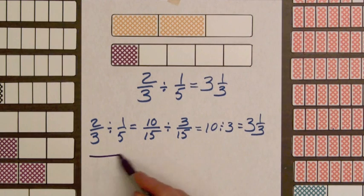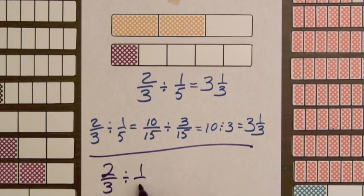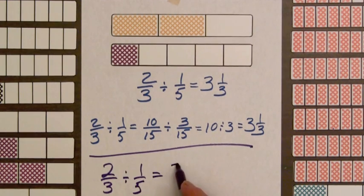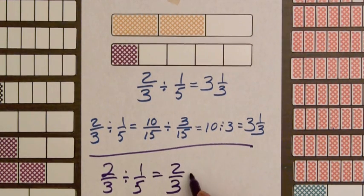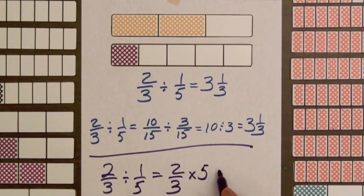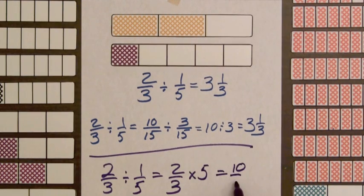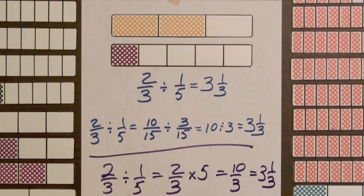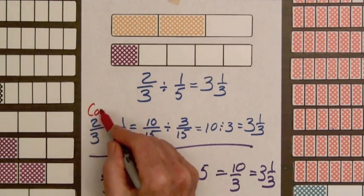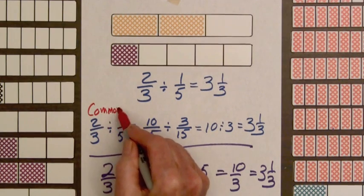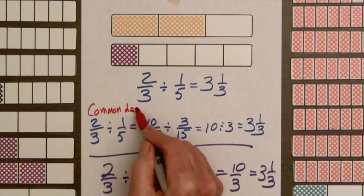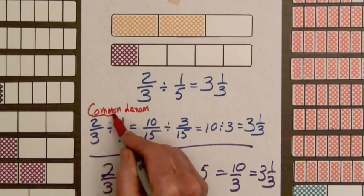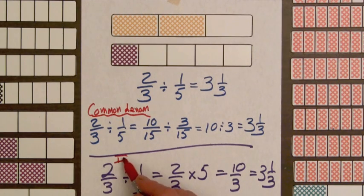Now let's use the invert the divisor method. We've got two-thirds divided by one-fifth. It's going to be two-thirds times five. Ten over three equals three and one-third. Let's label these methods. Common denominator. And down here we'll call this just invert.